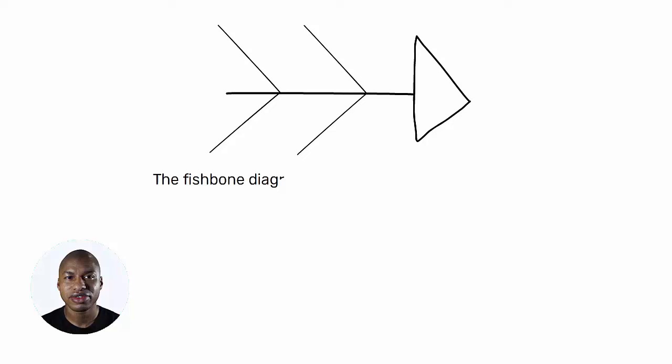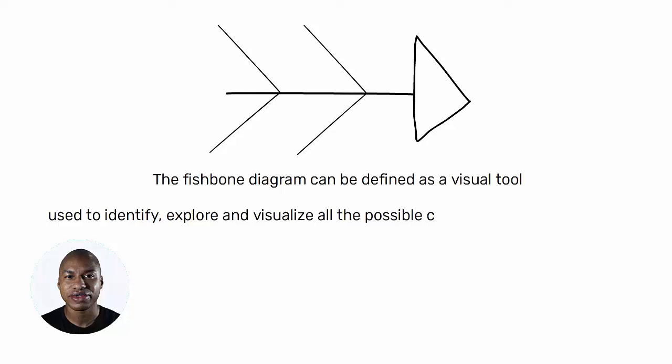The fishbone diagram can be defined as a visual tool used to identify, explore, and visualize all the possible causes related to a problem. It helps to find the root cause of the problem.